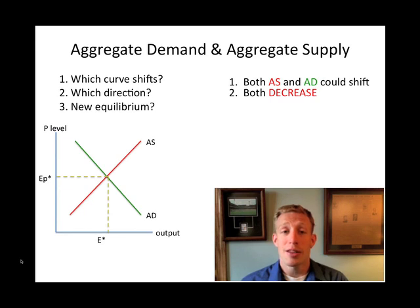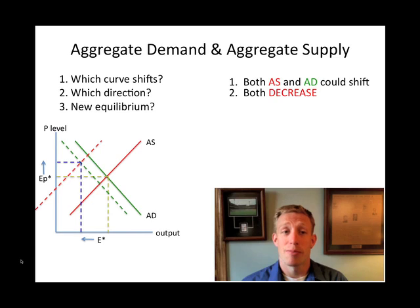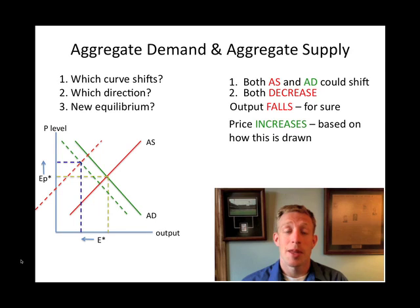This would lead to lower output and an uncertain impact on the general price level. Output definitely falls because there's less available and people are buying less. Price could go up or it could go down — based on the way this graph is drawn, prices end up increasing. You need to follow your graph, see what it says, and answer accordingly.